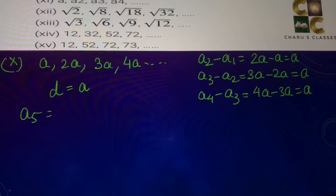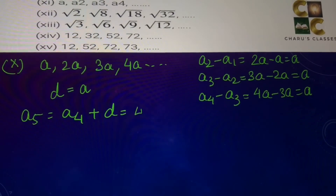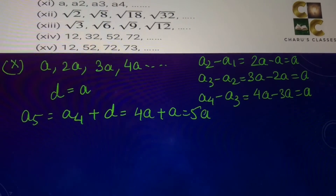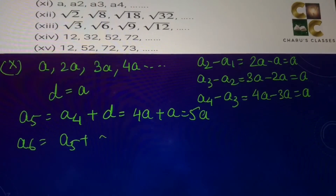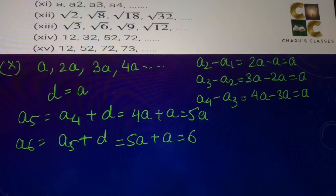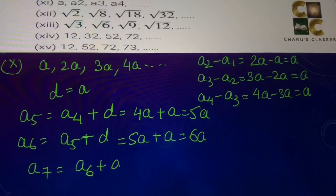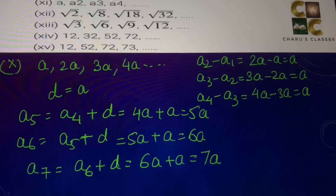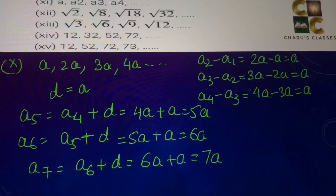For the final part with terms a, 2a, 3a, 4a, the common difference is a. To find the next three terms: a5 = a4 + d = 4a + a = 5a. A6 = a5 + d = 5a + a = 6a. A7 = a6 + d = 6a + a = 7a. So 5a, 6a, and 7a are the next three terms of this AP.